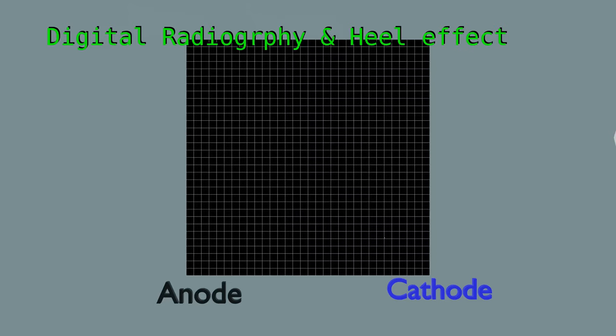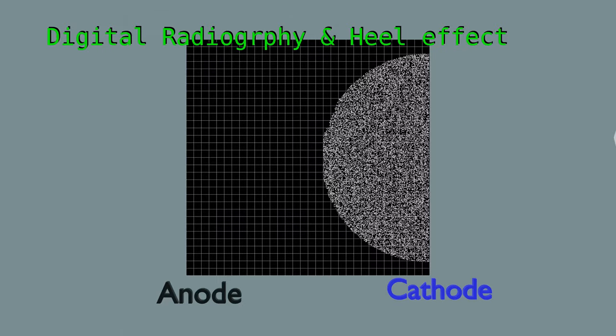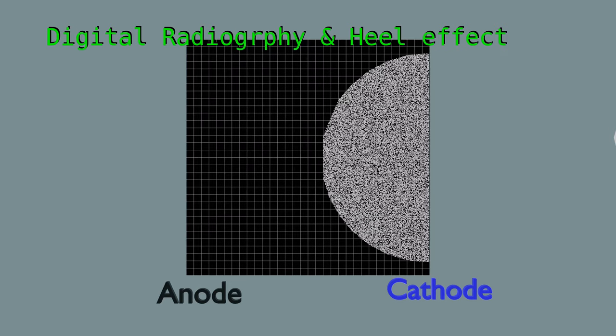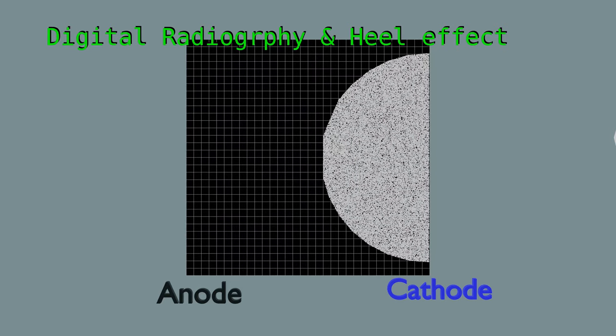But due to heel effect, cathode side of DR detector will receive more x-rays. The non-uniform x-ray beam due to heel effect can cause widening in cathode side of a digital image.